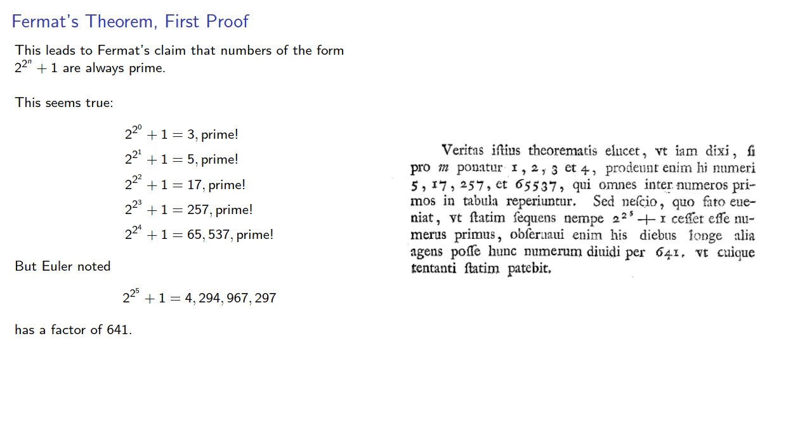Fortunately, Euler eventually changed his mind and began publishing number theory papers as ordinary mathematics papers, and we'll see how he obtained this factor of 641.